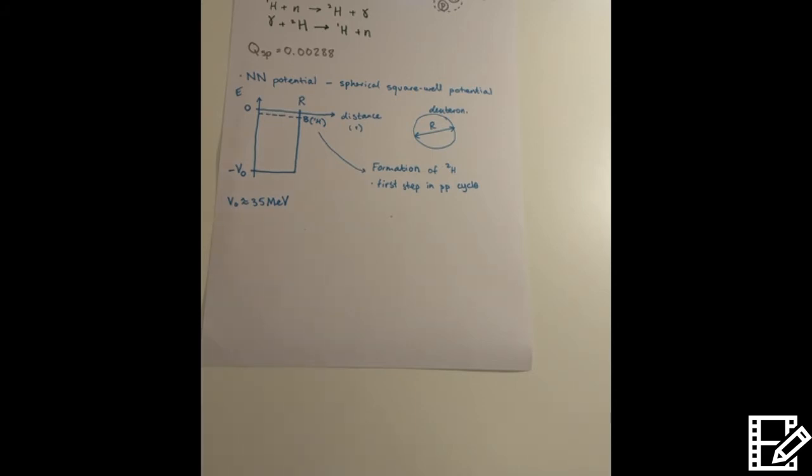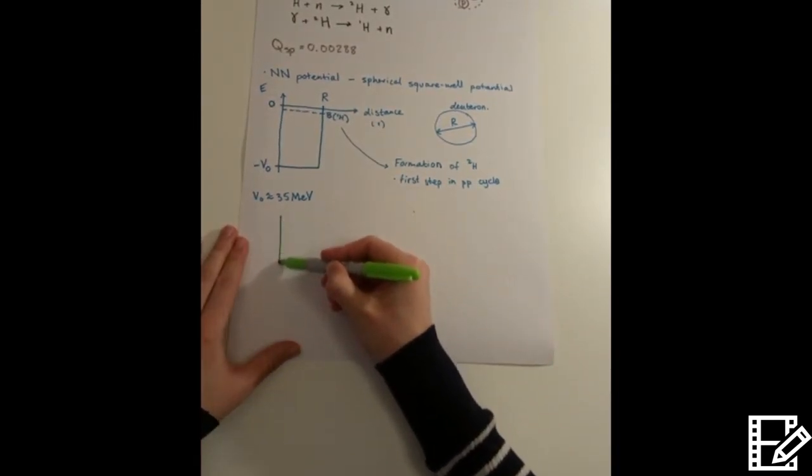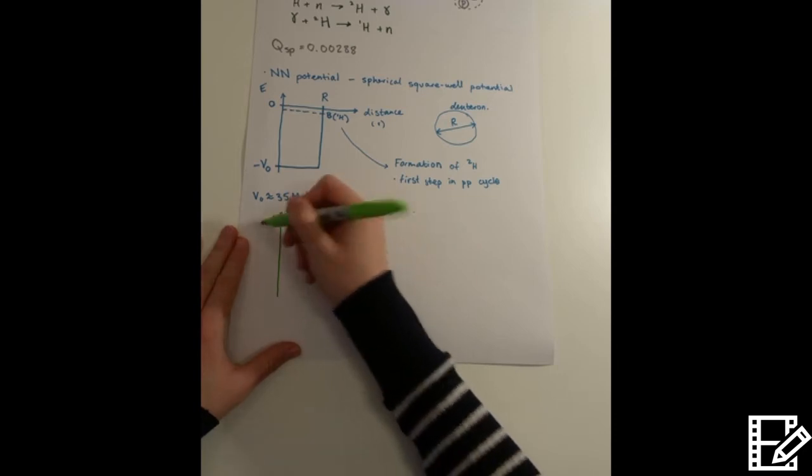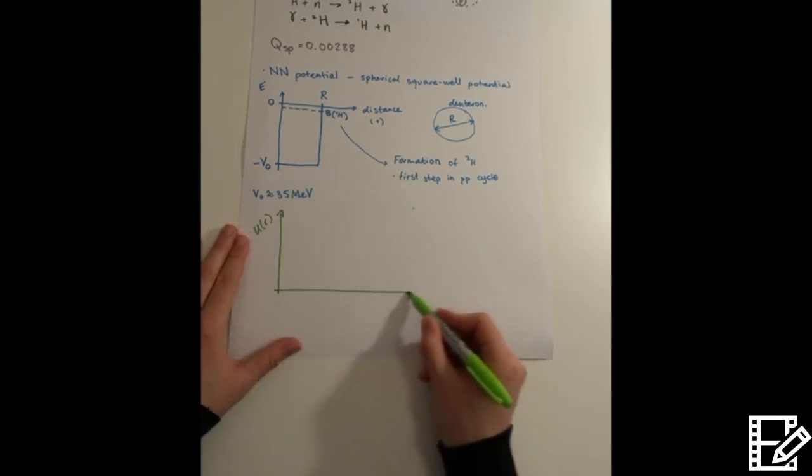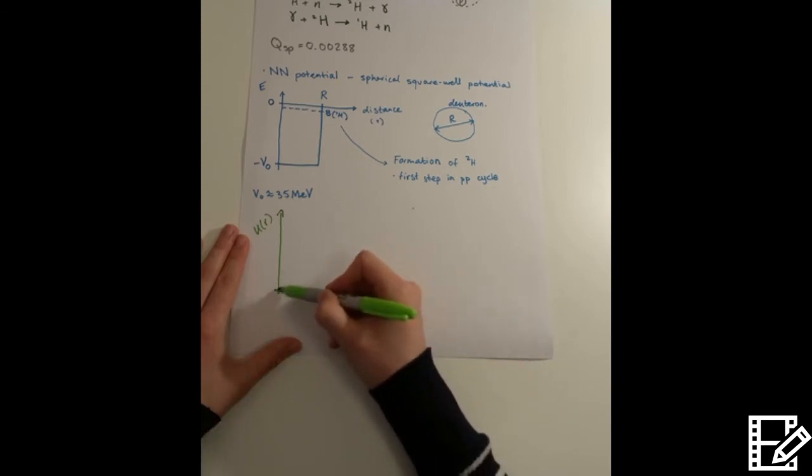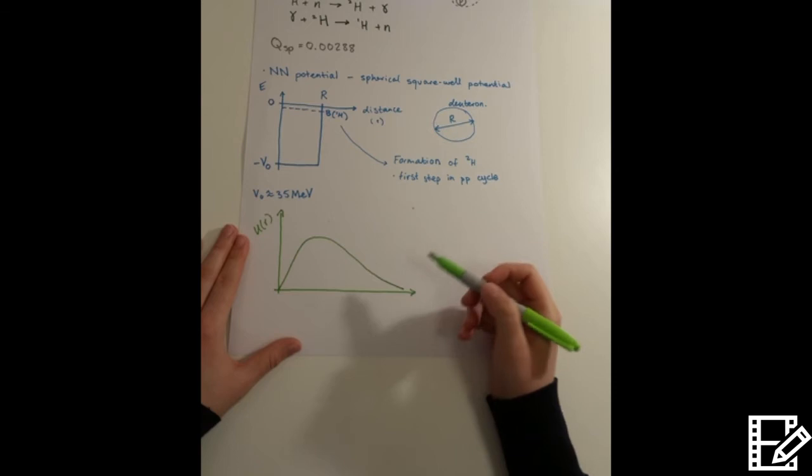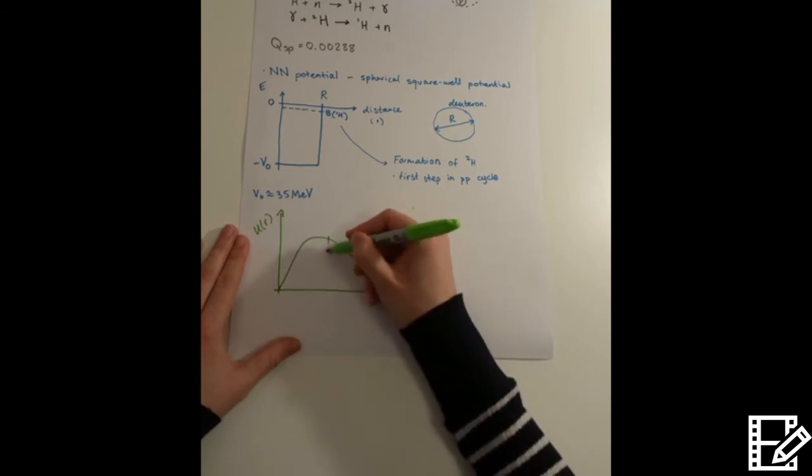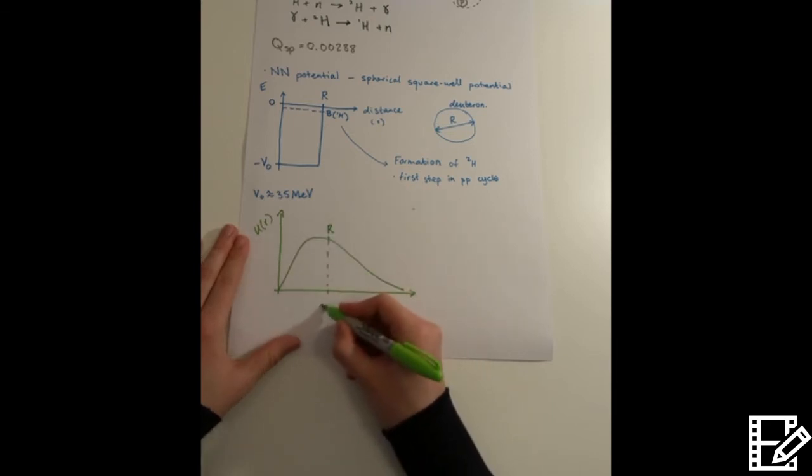Now the deuteron wave function turns out it actually looks like this. Here we have the value of r, and it's approximately 2 femtometers, where femto is 10 to the minus 15.